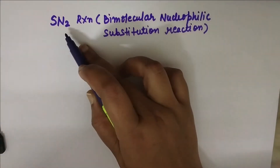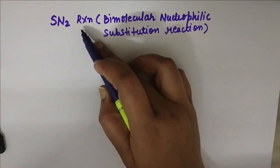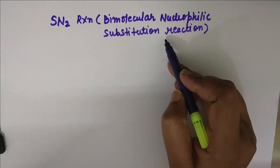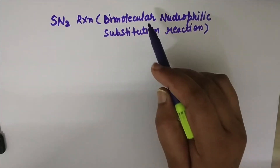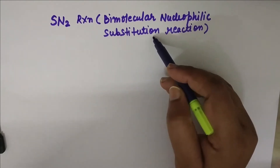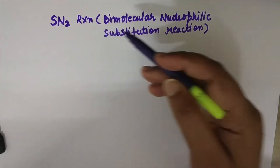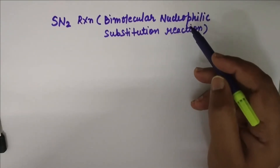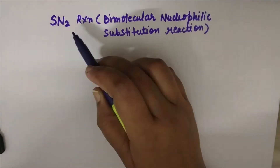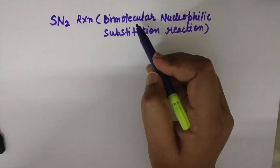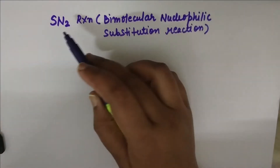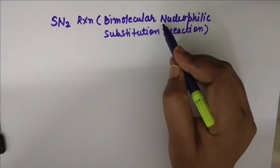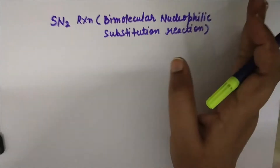Dear students, today I am going to explain the SN2 reaction, which is also known as bimolecular nucleophilic substitution reaction. If you want to know about nucleophilic substitution reaction or SN1 reaction, you can watch my other video. The link of that video will be given in the description box. So let's start the SN2 nucleophilic substitution reaction, which is also known as bimolecular nucleophilic substitution reaction.